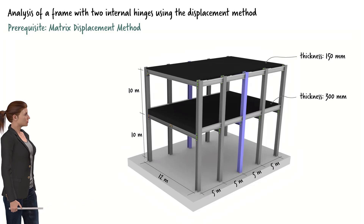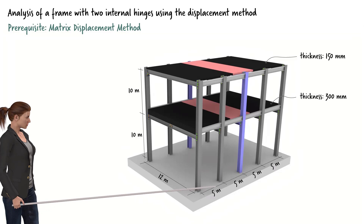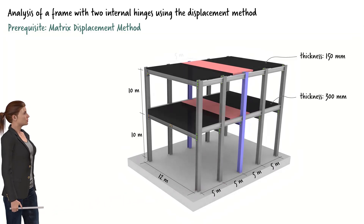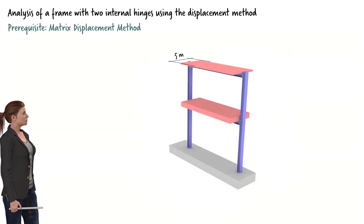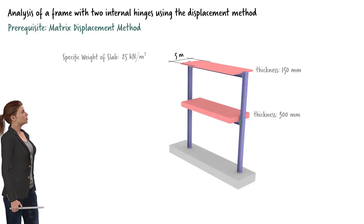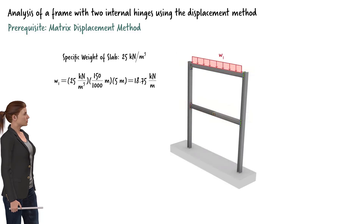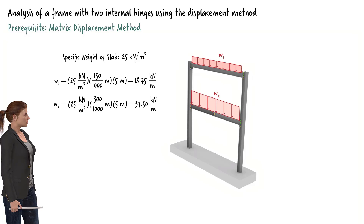The frame is responsible for carrying a portion of the slab loads. Since the distance between two consecutive frames is five meters, the width of the slab segments to be carried by the middle frame is five meters. The slabs are made of reinforced concrete with an average specific weight of 25 kilonewtons per cubic meter. Therefore, we get a uniformly distributed load of 18.75 kilonewtons per meter for the upper beam and 37.5 kilonewtons per meter for the lower beam.